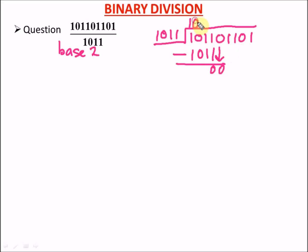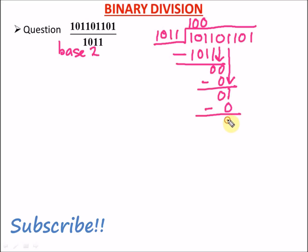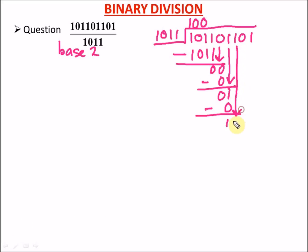Can 1011 go into 00? No, it can't. So we write a zero in the quotient. Zero times 1011 is zero, and zero minus zero is zero. We drop down the next digit, which is 1. Can 1011 go into 1? No, so we write another zero. Zero times 1011 is still zero, and 1 minus 0 is 1.